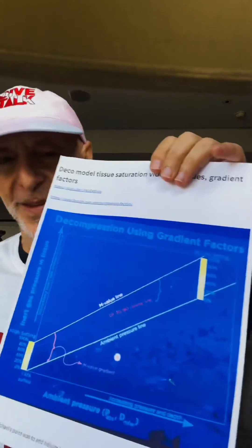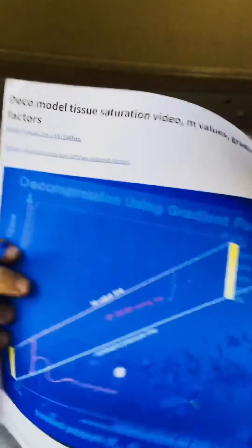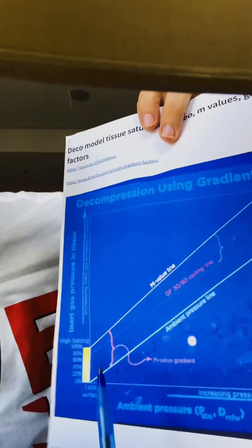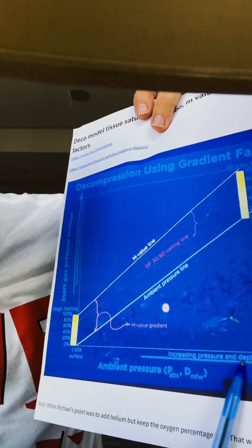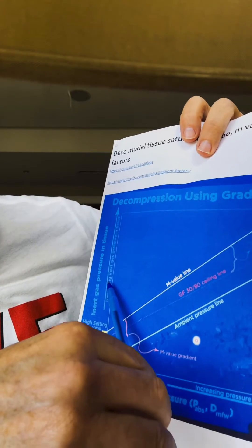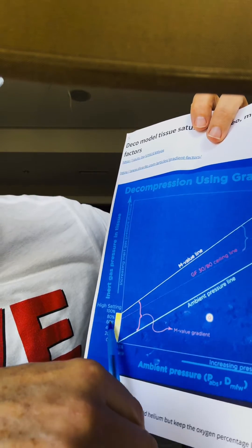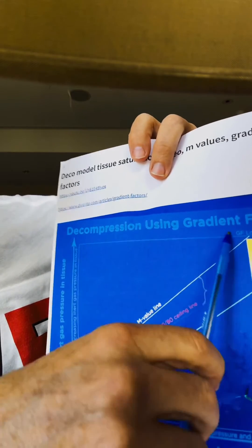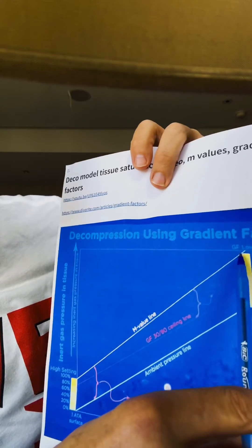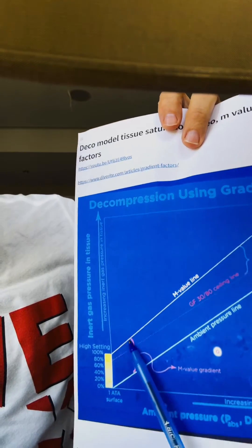Let me show you a chart — sometimes it's easier to see this visually. I love this chart; I got it from Simon Mitchell's article. Over here we have depth: the bottom part says increased pressure and depth. Down here we have our high gradient factor settings, and here we have our low gradient factor settings. This is our M value — the maximum tissue saturation we can handle. This is 100% gradient factor.